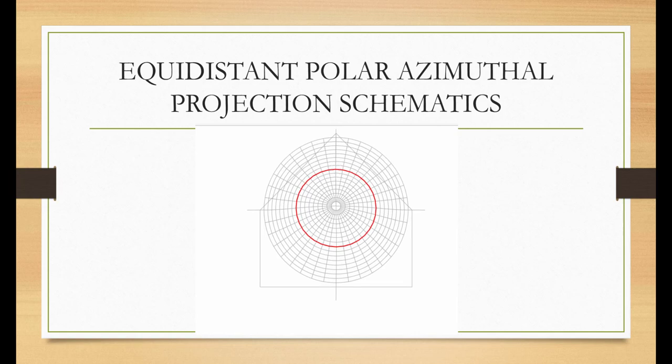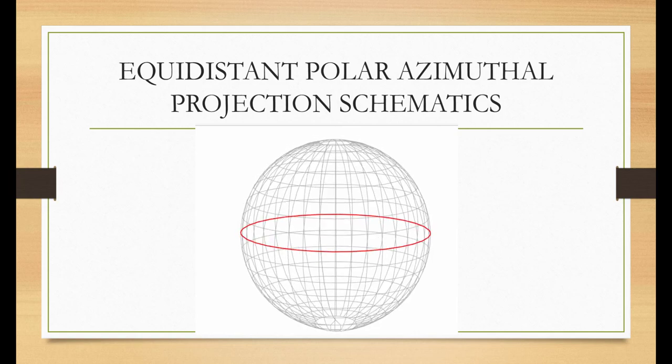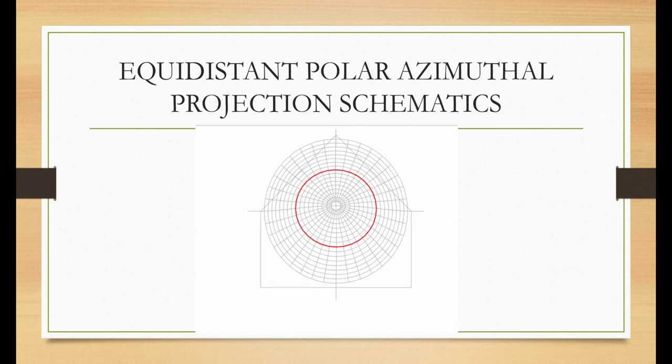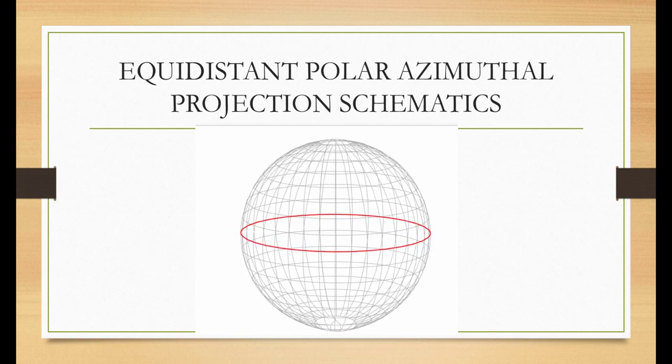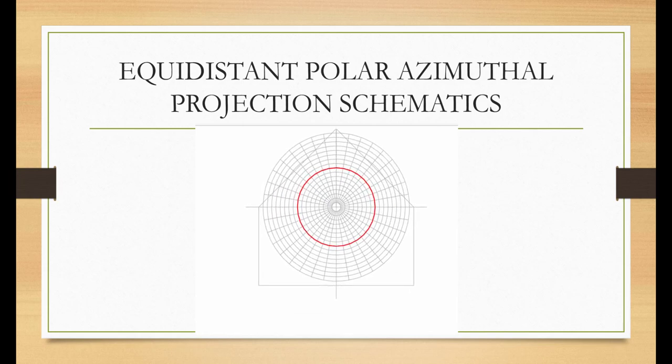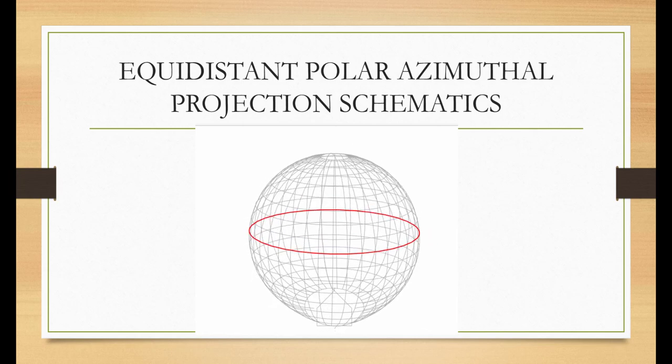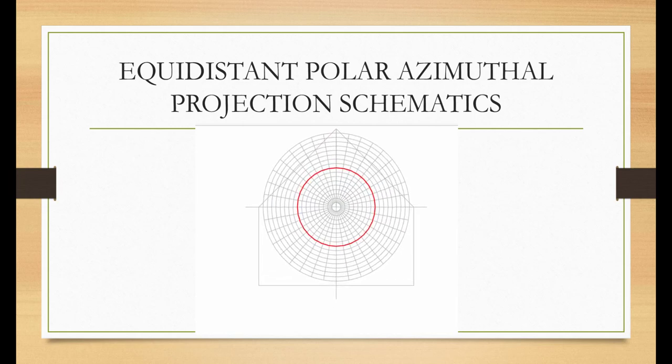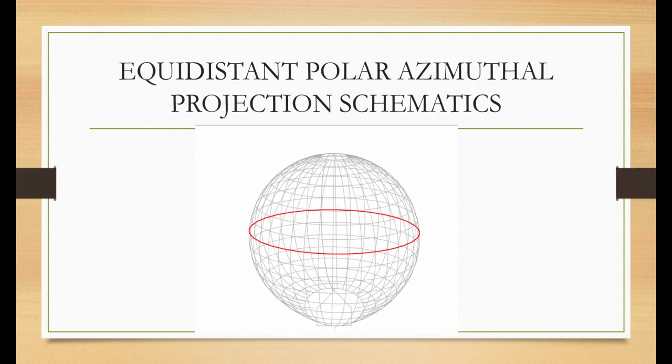All meridians on the polar aspect are straight lines. Distances and directions measured from the center are true. The azimuthal equidistant projection is used in the polar aspect for world maps and maps of the polar hemispheres. The projection is listed as polar equidistant in the coordinate system editor.